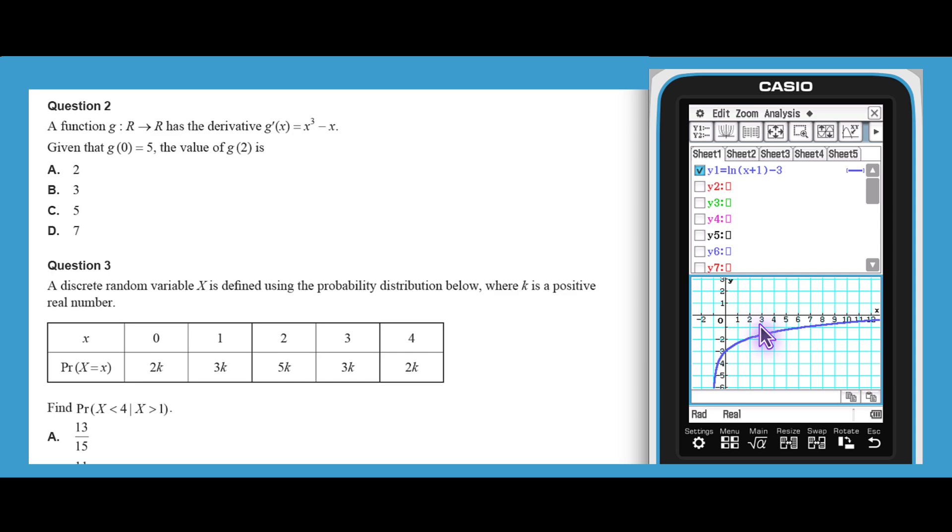Question 2 asks us to find a function value for g of x given its derivative g dashed x and an initial condition. One way to answer this question is to find g of x by integration. Due to the relative simplicity of the integration, I'll do it without my CAS.